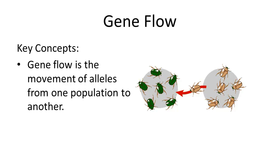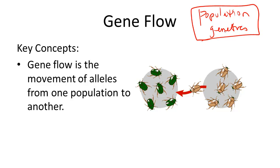What is gene flow, and why is it important? Evolutionary biologists need to study population genetics, or frequencies of genes in the population. In order to understand evolutionary trends, it's important to understand how DNA frequencies behave in a larger group. So one very important condition for evolution to occur is that there's gene flow.